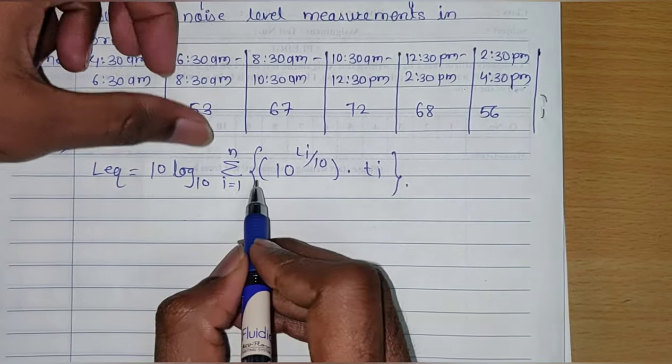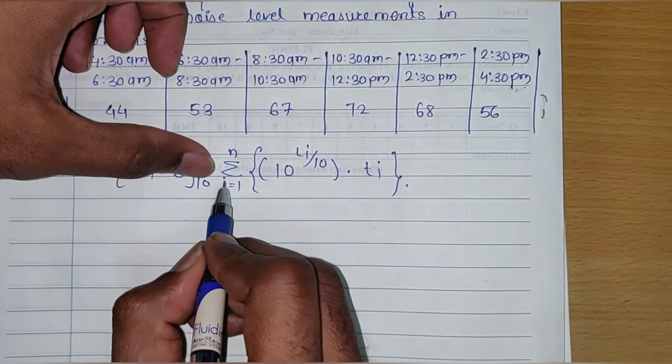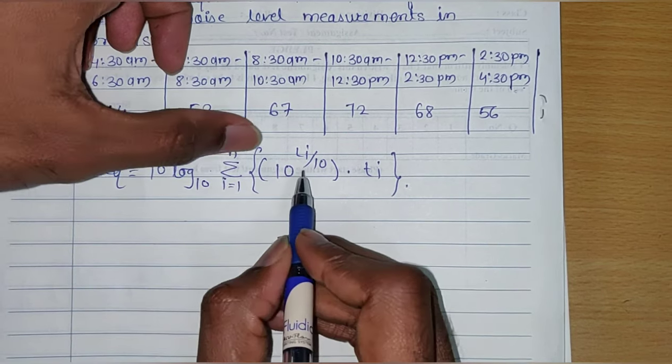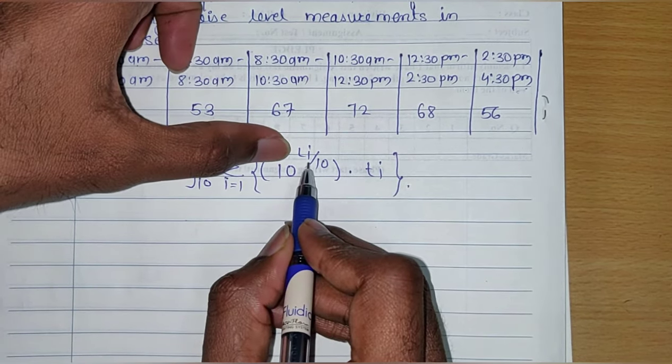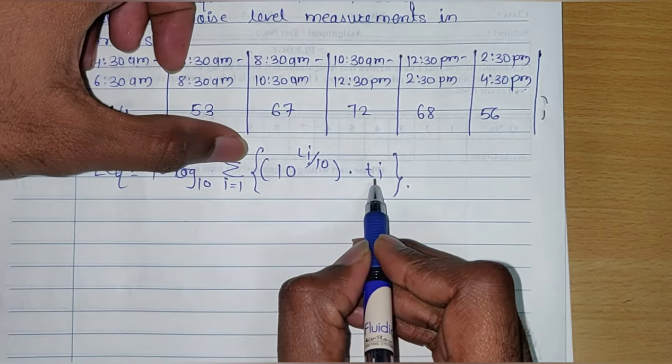Now for the terminologies involved in this equation: n is the total number of samples taken, L_i is the noise level in decibels of the i-th sample, and t_i is the fraction of total sample time. First, I will write the given L_i values.